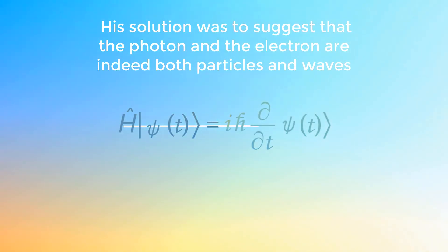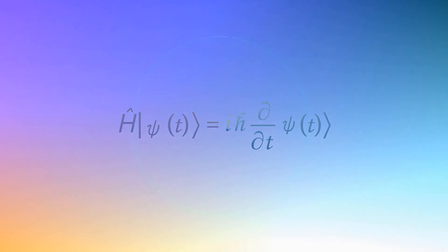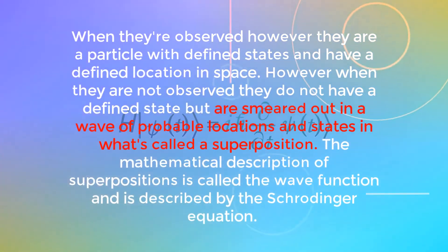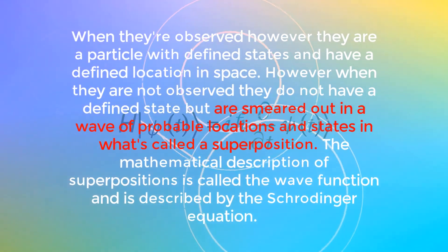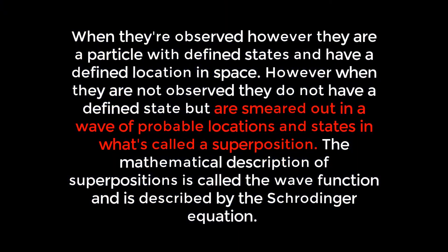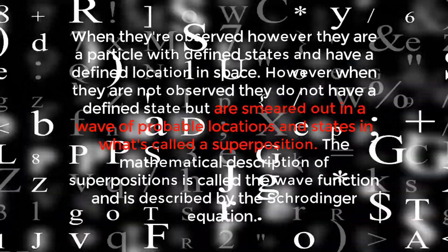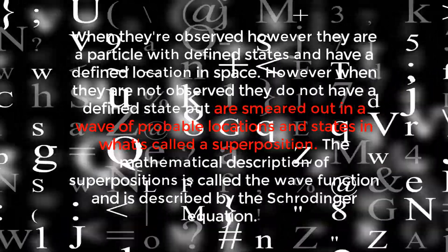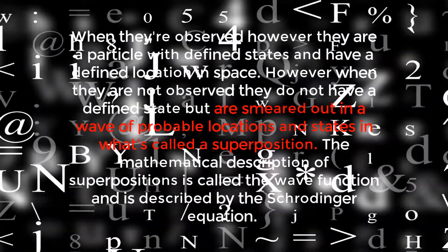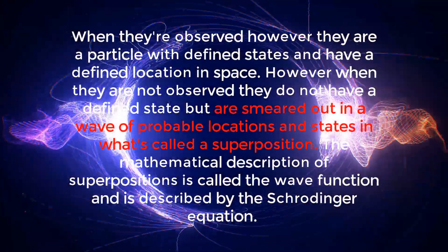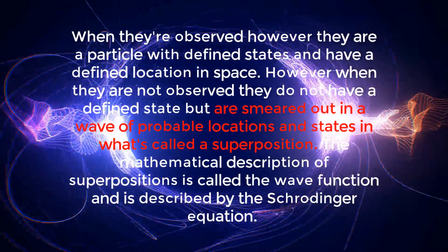His solution was to suggest that the photon and the electron are indeed both particles and waves. When they are observed, however, they are a particle with defined states and have a defined location in space. However, when they are not observed, they do not have a defined state, but are smeared out in what's called a wave of probable locations and states in what's called a superposition. The mathematical description of superpositions is what's called the wave function, and it is described by the Schrödinger equation.